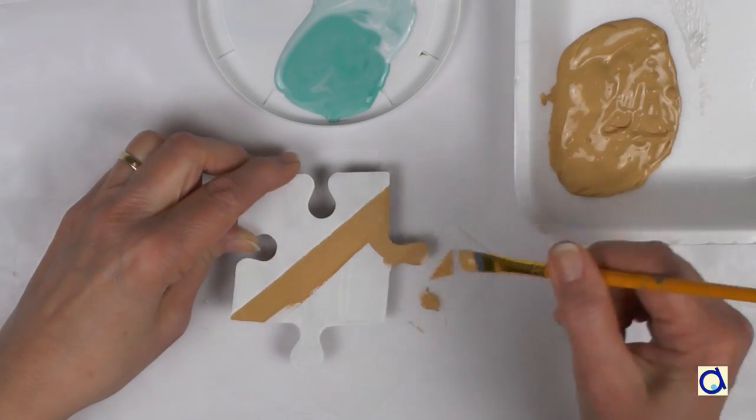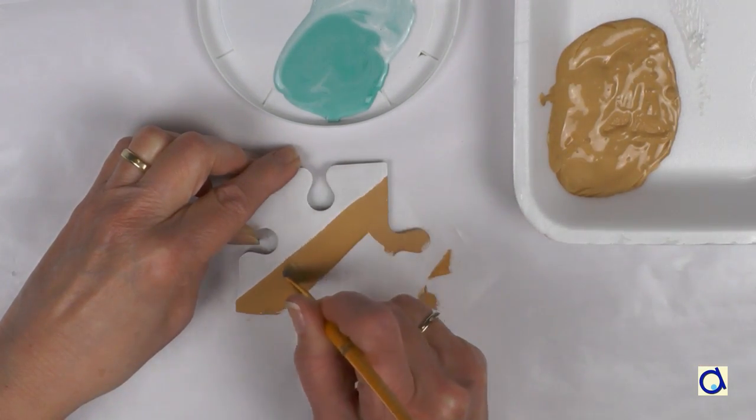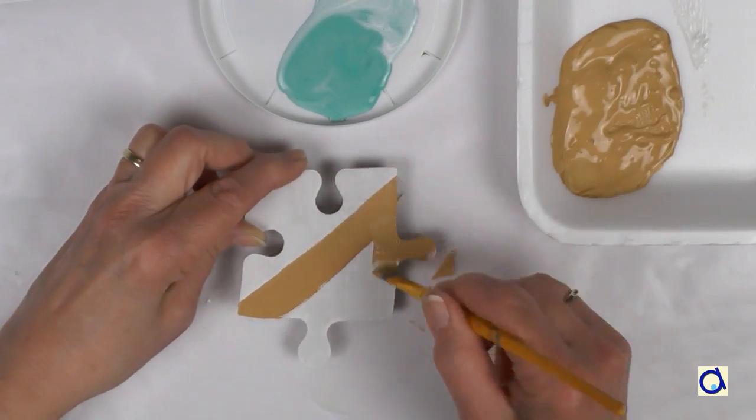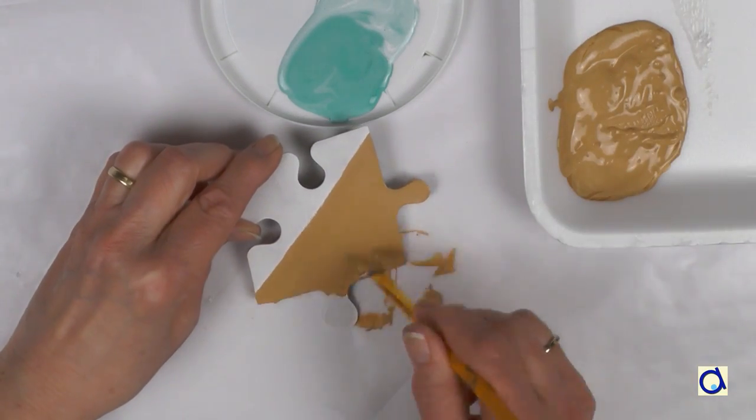With the first piece of puzzle, I chose to represent a beach. Here is how to create a magnet like that! Start by painting about half of the puzzle piece in a sand color and let dry.